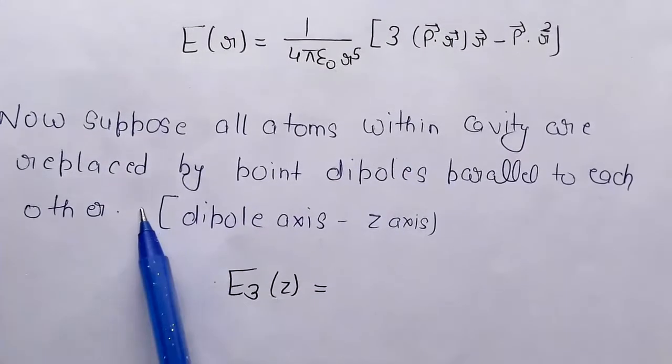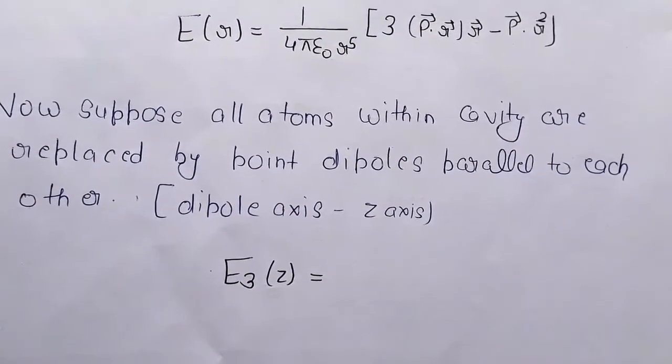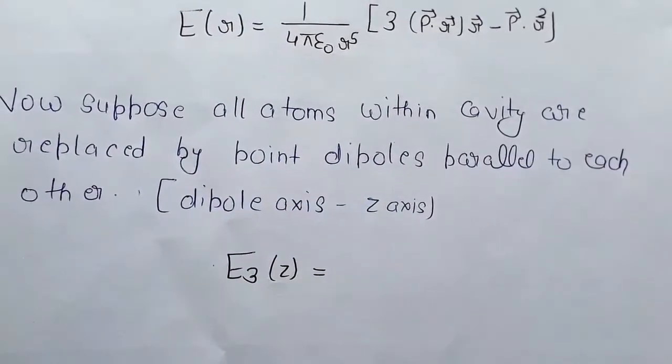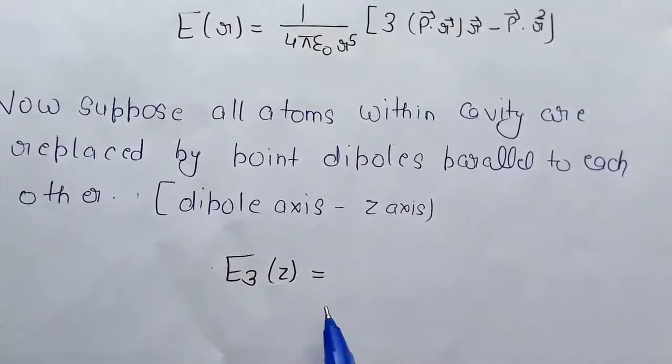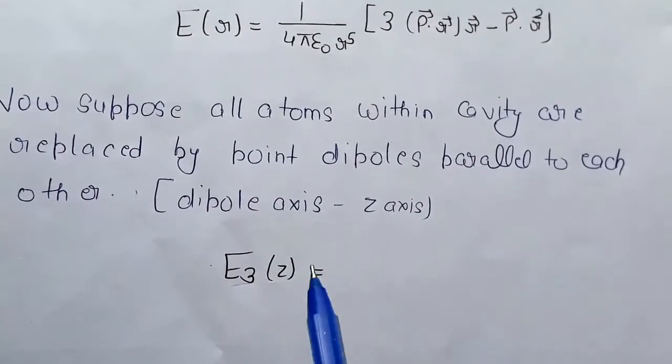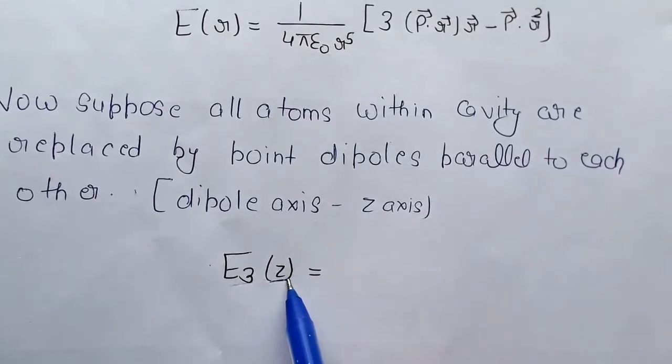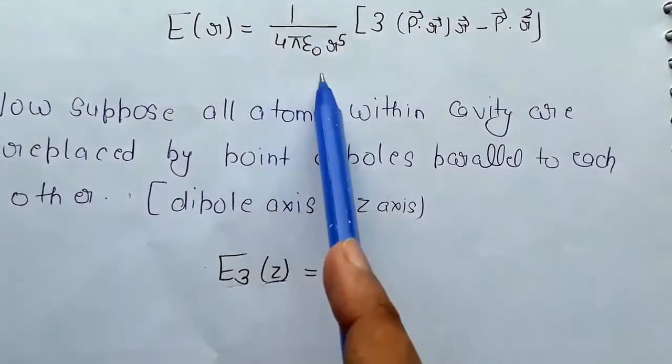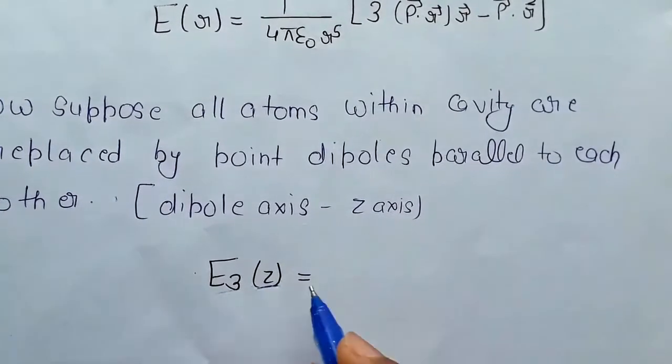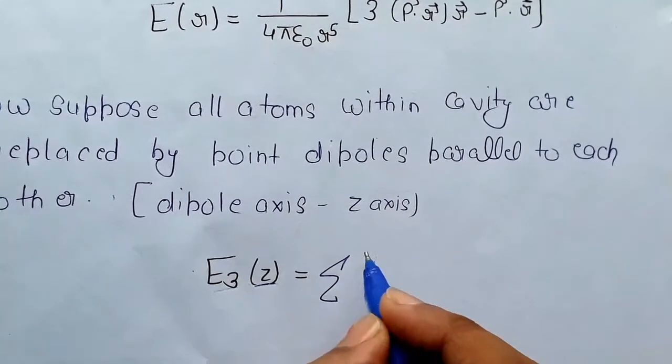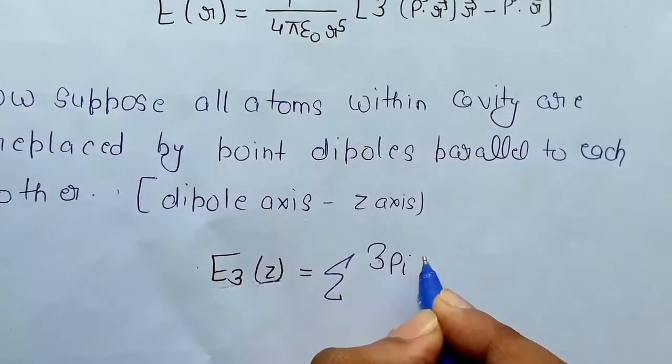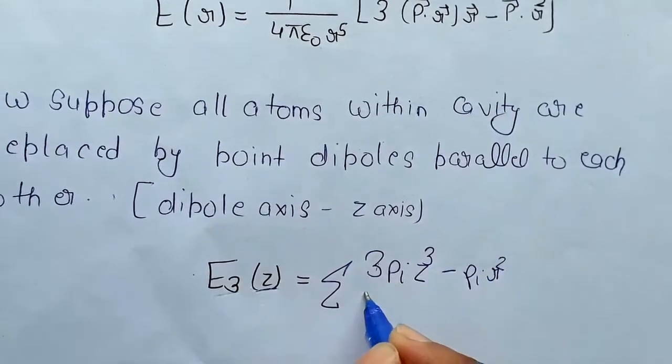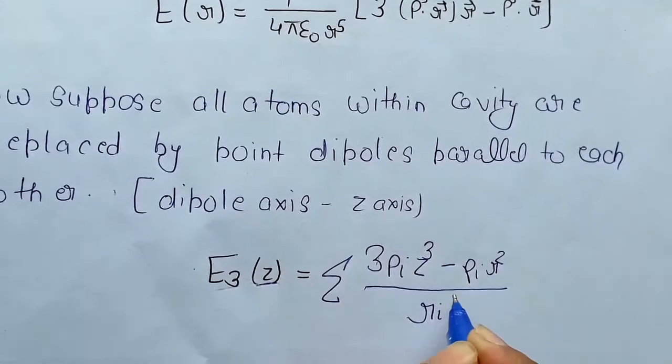Now suppose all atoms within the cavity are replaced by point dipoles parallel to each other. Now let's tell you something about the field E3 which you want to measure, where we have the direction called dipole axis and z axis. Now this field inside this part is constant. So what can we put here? E3(z) equals summation 3 pi z squared minus pi r squared upon r i power 5.